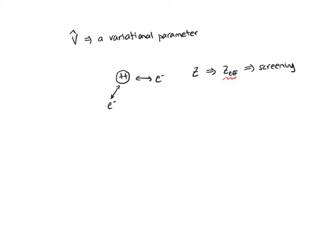Z_effective is going to be our variational parameter. We're going to adjust it until we get the minimum energy solution. Our trial wave function for the helium atom is a 1s wave function times another 1s wave function, because both electrons are going to be in 1s orbitals. The 1s wave function uses the hydrogen wave functions but with a larger charge on the nucleus: Z to the 3/2 over pi to the 1/2 times e to the minus Z times R. And instead of Z, we're going to use Z_effective. So that's our trial wave function.